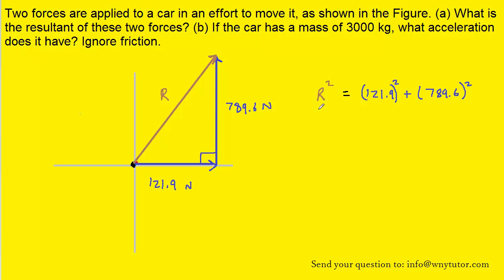So here we have the Pythagorean theorem, c squared equals a squared plus b squared. When you solve for the resultant r, you should obtain approximately 799 newtons, and that will represent the magnitude of the resultant force acting on the car.